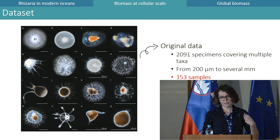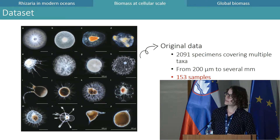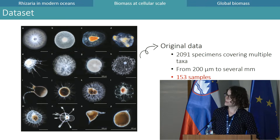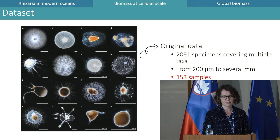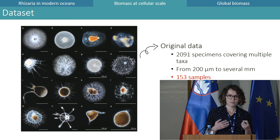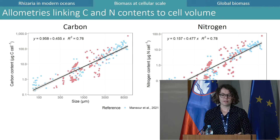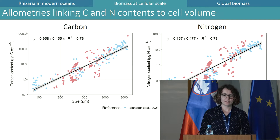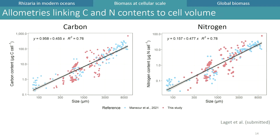We collected more than 2,000 specimens belonging to the Radiolarian order Scolodaria, photosymbiotic Nassellaria individuals, members of the newly defined order Arodaria and Spumellaria, and specimens belonging to many Phaeodarian families. These specimens ranged in size from 200 micrometers to several millimeters. After pooling, we obtained 153 samples, to which we added 103 samples from literature data. We then tested for the relationship between size and elemental content and found that over our entire size spectrum the carbon and nitrogen contents relate well to cell size.